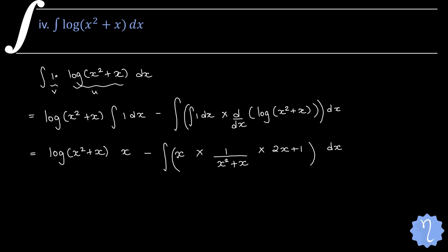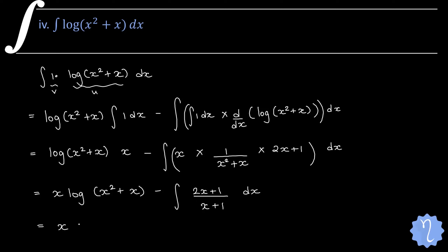From here we can take x common in the denominator x²+x = x(x+1), and cancel it with the x in the numerator. So we get x·log(x²+x) minus ∫(2x+1)/(x+1) dx. Now for the integral, I write the numerator 2x+1 as 2x+2−1, adding and subtracting 1 to match the denominator.